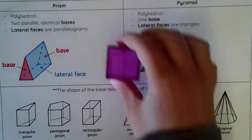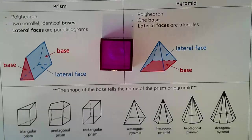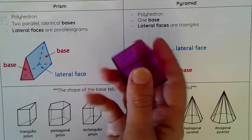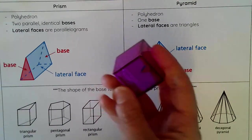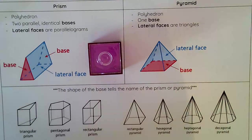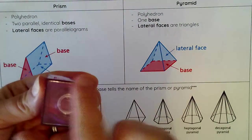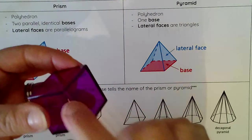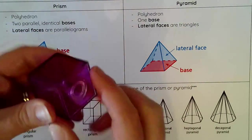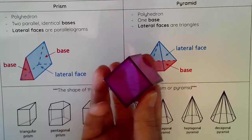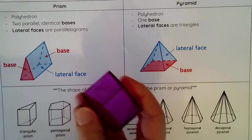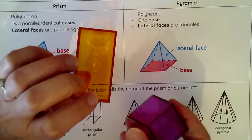This smaller shape also has two bases, making it a prism, and the base is a rectangle — so it is a rectangular prism. However, this one has a more specific name: because the base is actually a square and all faces are squares, this is called a cube. A cube is a type of rectangular prism — just a more specific one.